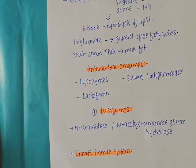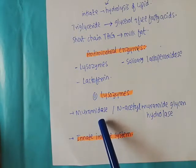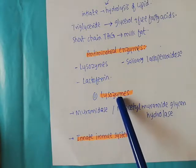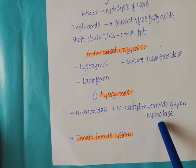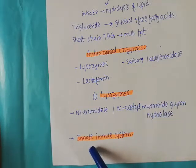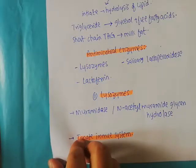The enzyme lysozyme is also known as muramidase and N-acetyl muramide glycan hydrolase. These three names refer to one and the same thing. The lysozyme enzyme is an important component of the innate immune system of humans. The innate immune system is a non-specific immune system found in our body, and lysozyme is an important member of this system.